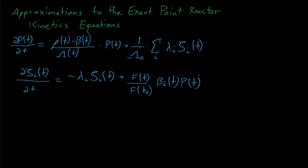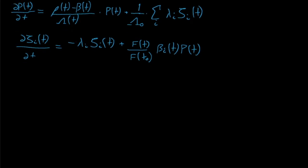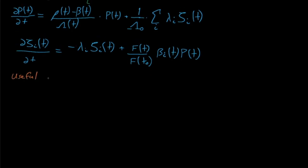This form requires that we solve for the time-dependent delayed neutron fraction, reactivity, and neutron generation time, which all require solving for the perturbed flux throughout the course of our transient. Solving for this detailed, time-dependent flux behavior is very time-consuming and very difficult. So what we'll do is make a series of assumptions that, in essence, assume that this flux shape doesn't change significantly over time, which allows us to greatly simplify these equations and assume that most of our kinetics parameters are constant over time.